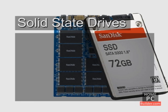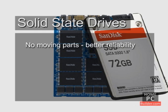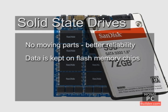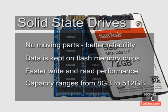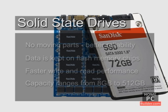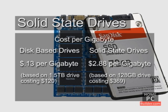Solid state drives, or SSDs, have no spinning disk to store data on. All information is kept on flash memory chips, and can be written to and read back much quicker than from a disk-based drive. Compared to disk-based drives, SSDs have lower capacities of between 8 GB to 512 GB, and the cost per GB is also much higher. Larger solid state drives are coming and you can expect the cost per GB to drop, but disk-based drives will continue to be the most popular due to their far greater storage capacity.